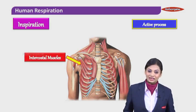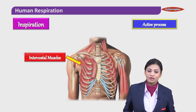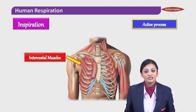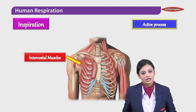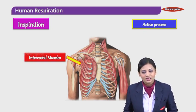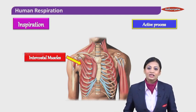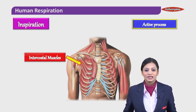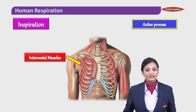First, we will be dealing with the intercostal muscles. What are intercostal muscles? These are the muscles which are in between your costal cartilage — what I mean by costal cartilage is in between your ribs. So the intercostal muscles are the muscles which are placed in between your ribs.